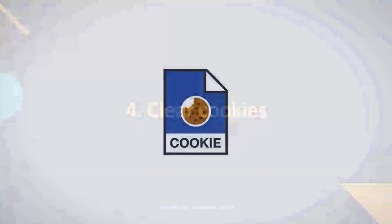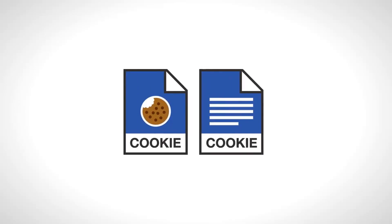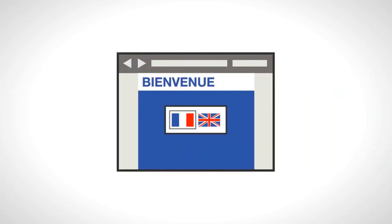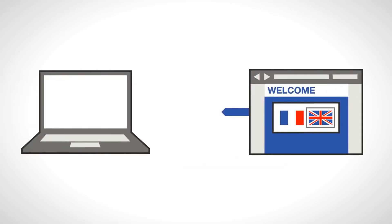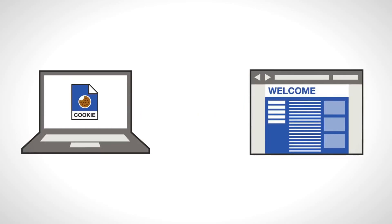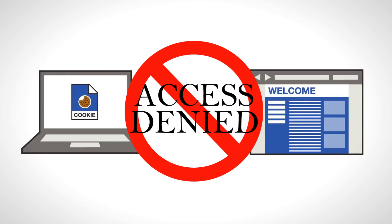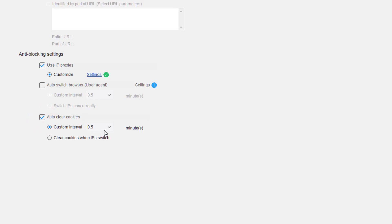The fourth tip is to clear cookies. A cookie is like a small document containing helpful information about you and your preferences. For instance, if you open a website and change the preferred language to English, the cookie will help the website remember your preference, and every time you open the website it will automatically switch to English. If you are scraping a website constantly with the same cookie, it's easy to be detected as a scraping bot. Octoparse allows you to clear cookies automatically from time to time. You can customize the time interval for clearing cookies or choose to clear cookies when IPs switch.